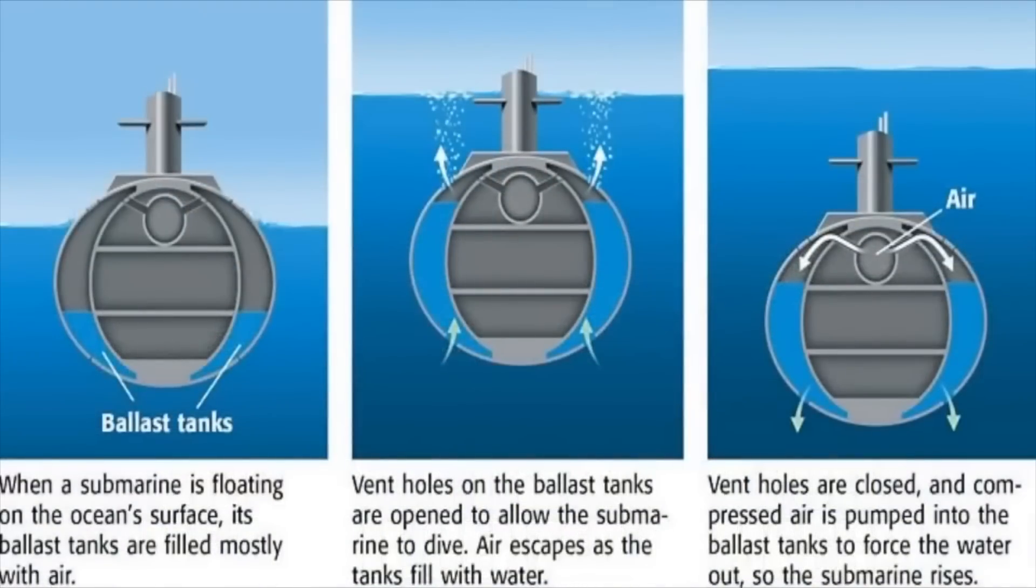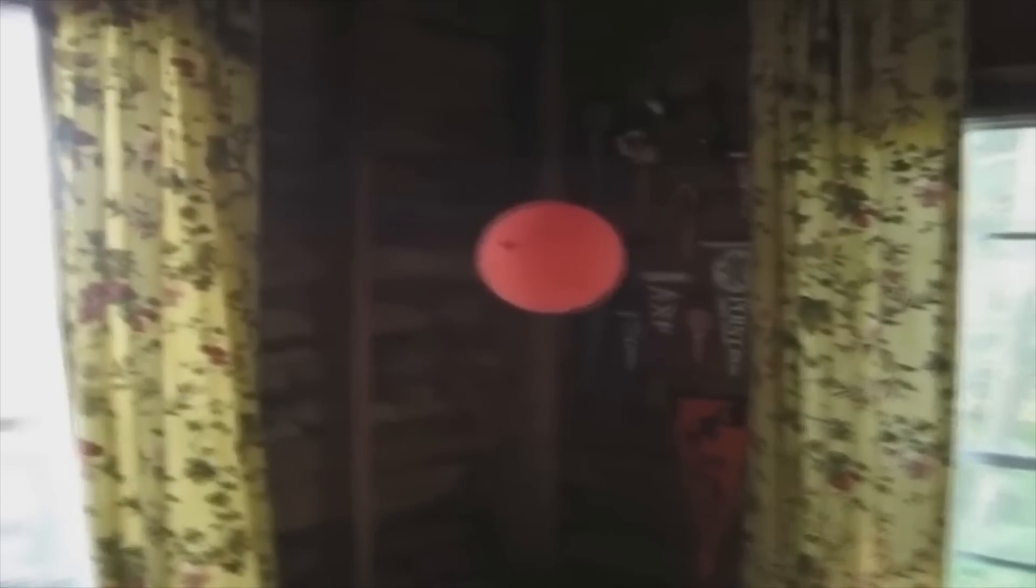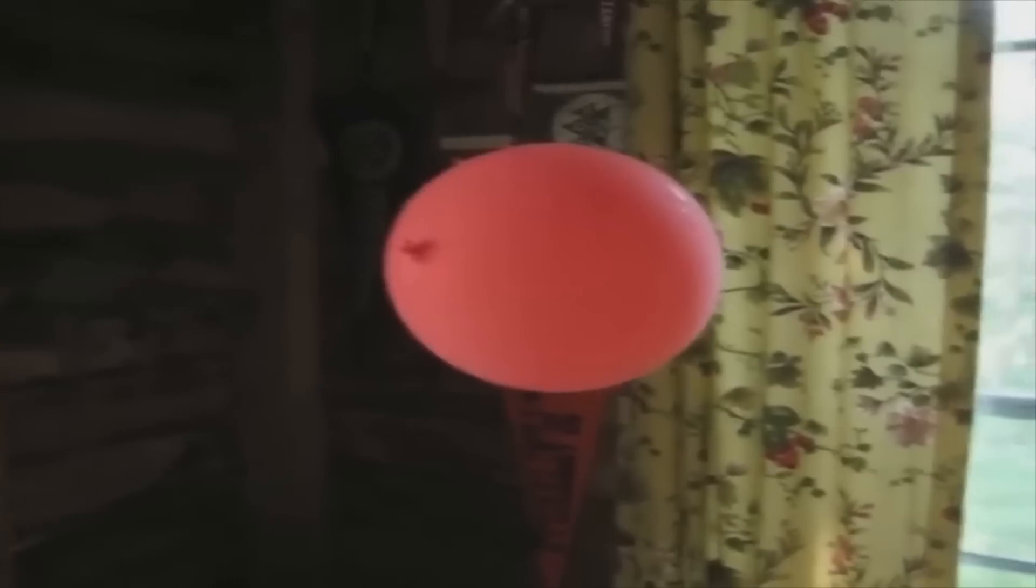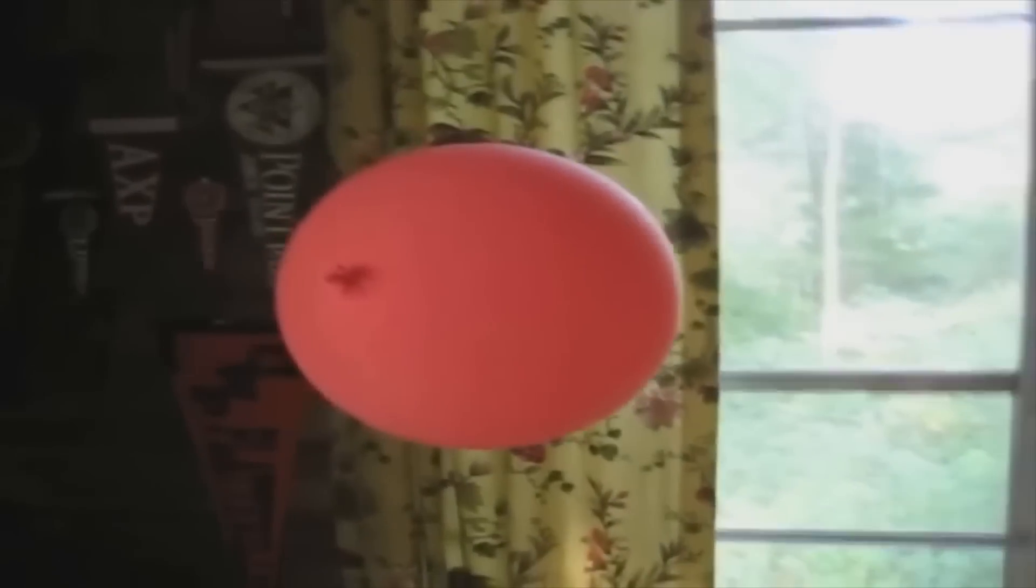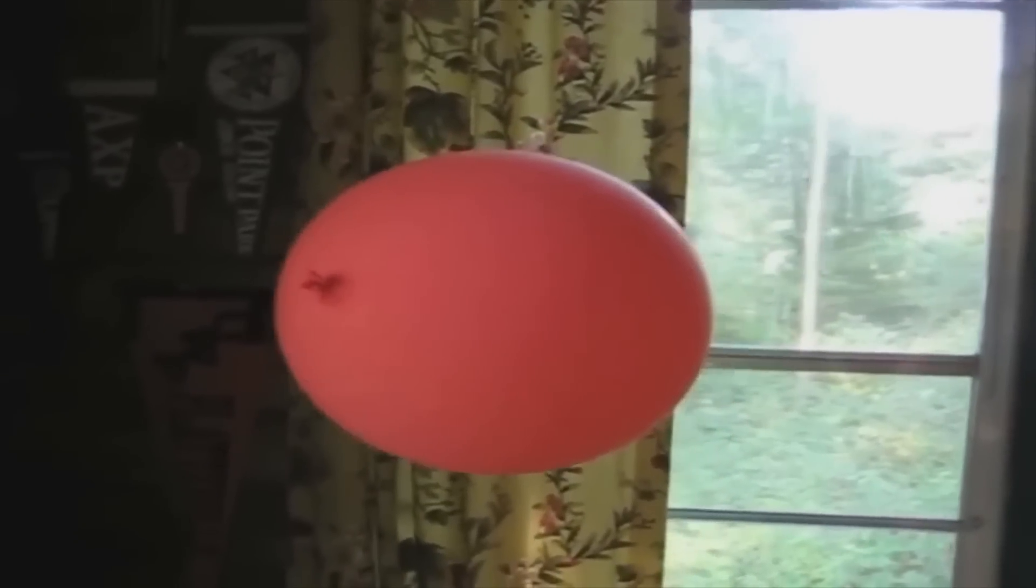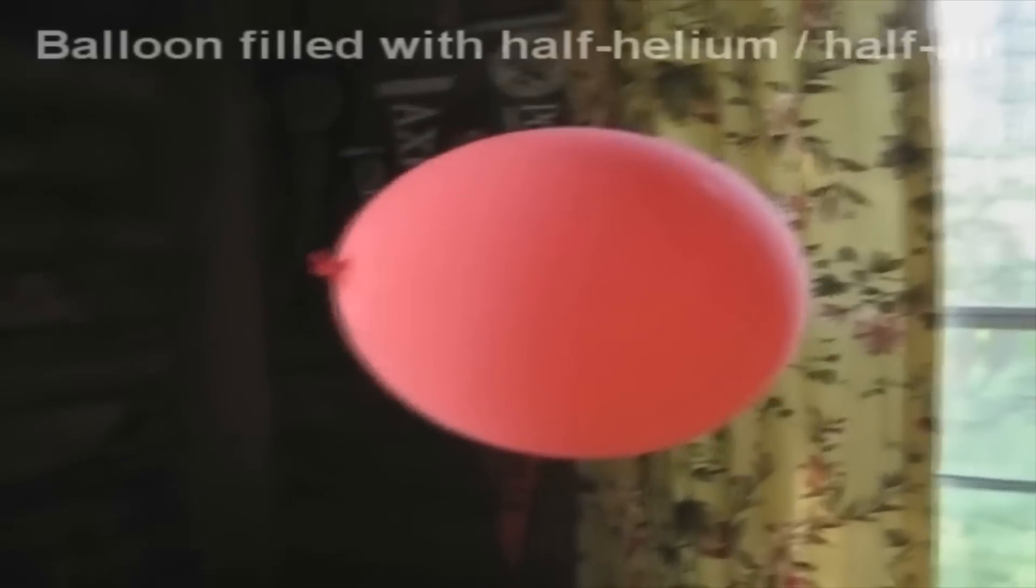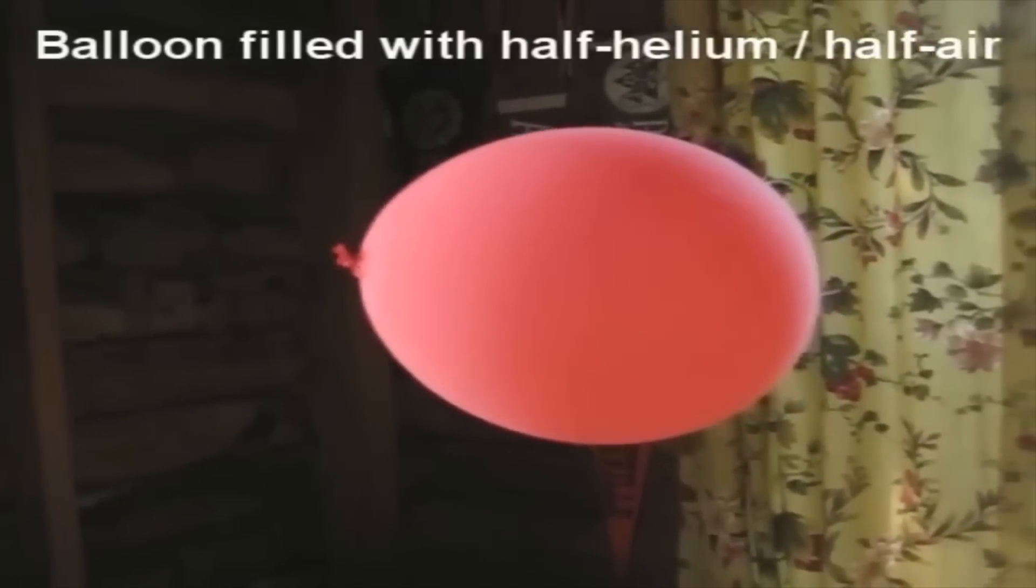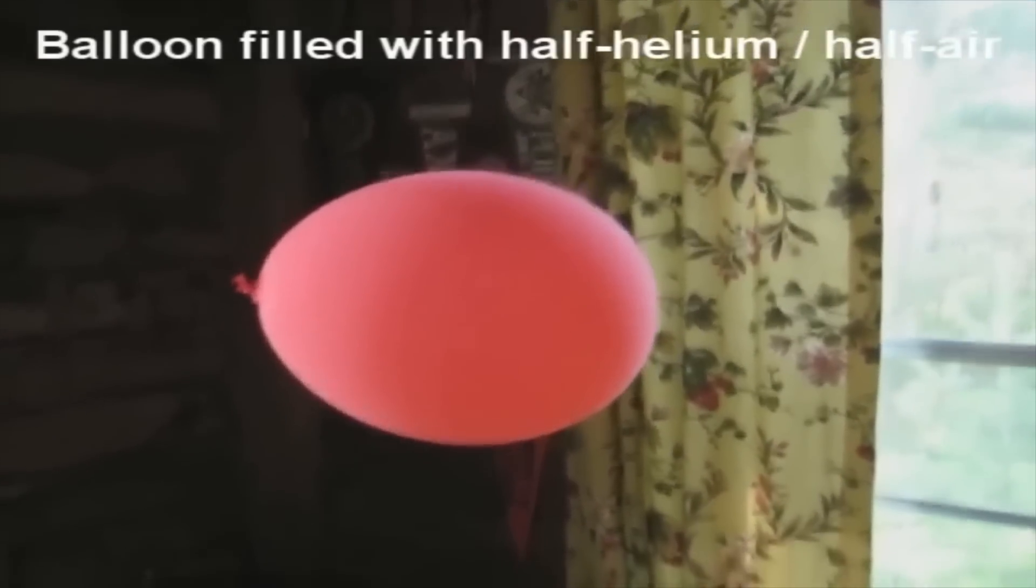Submarines float on the surface when their ballast tanks are filled with air, but when the vents are opened and seawater floods in, they begin to sink as the submarine's density becomes greater than water. We can also prove this fact of relative density by filling a plastic balloon with approximately half helium and half air. Filling a balloon with just the right amount of helium to balance out the density of the plastic results in a gravity-defying, levitating balloon at equilibrium that neither rises nor falls.